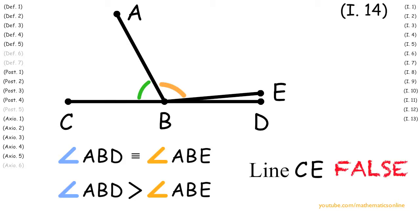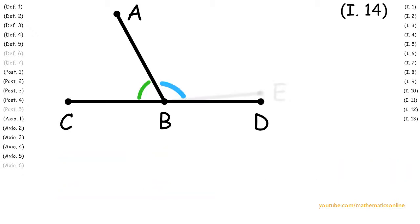So this shows that any line BE that we pick to be in a straight line with BC will always lead us to a contradiction, and therefore line BD must be the only line in a straight line with BC, and line CD is a straight line.